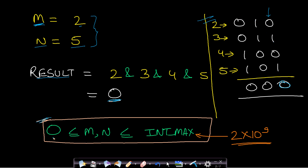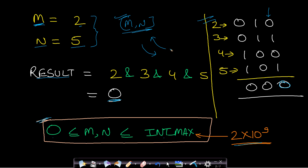The constraint gives a range from zero to INT_MAX, which is approximately 2×10^9. You cannot pre-compute the AND values for the range [m, n] and store them in a matrix or segment tree, because the space complexity would be extremely high for a matrix of that size.